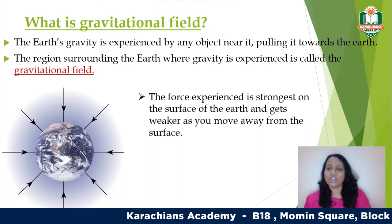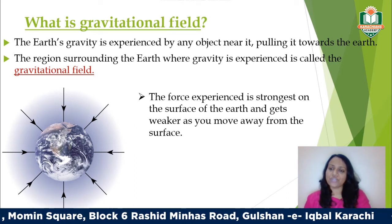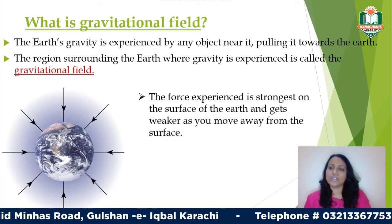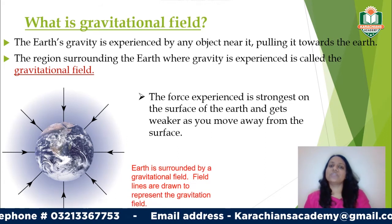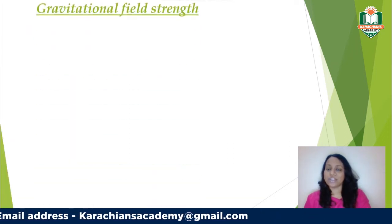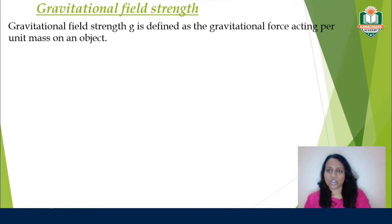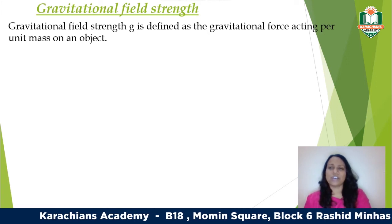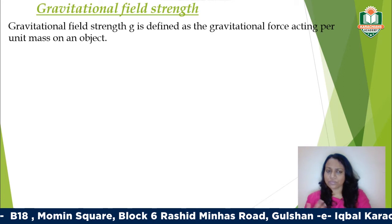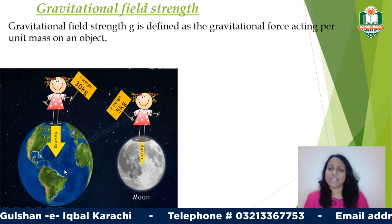As you move away from the surface of the earth, the force of gravity becomes weaker. To represent the gravitational field, we use straight lines with arrows pointing inward towards the center of the earth, as shown in the diagram. Gravitational field strength measures the amount of force acting per unit mass on an object. For the earth it is 10 N/kg; for the moon it is 1.6 N/kg; other planets like Mars and Neptune each have their own values.